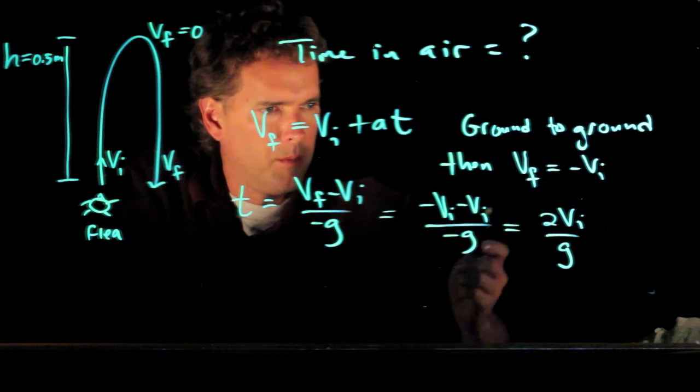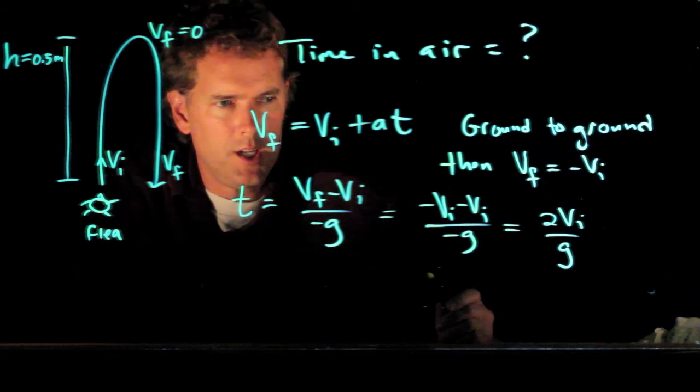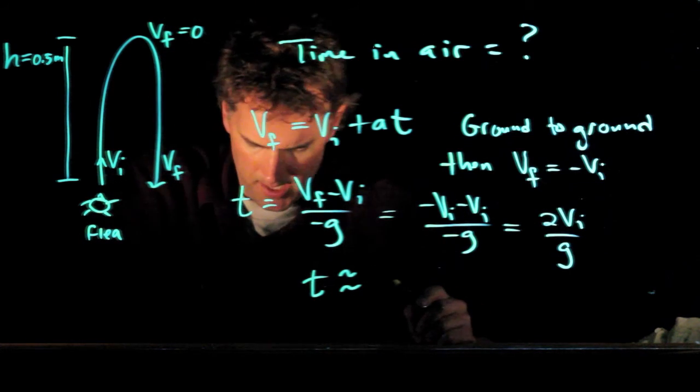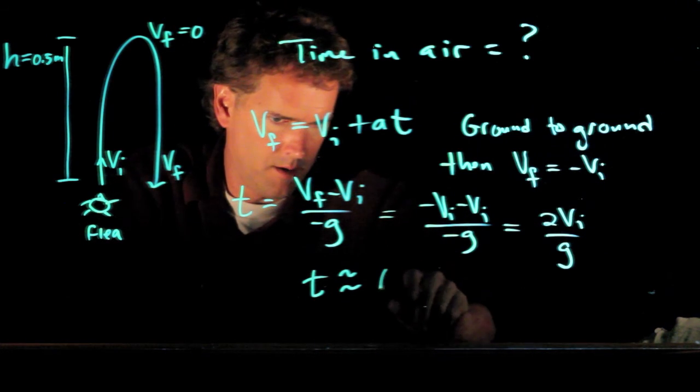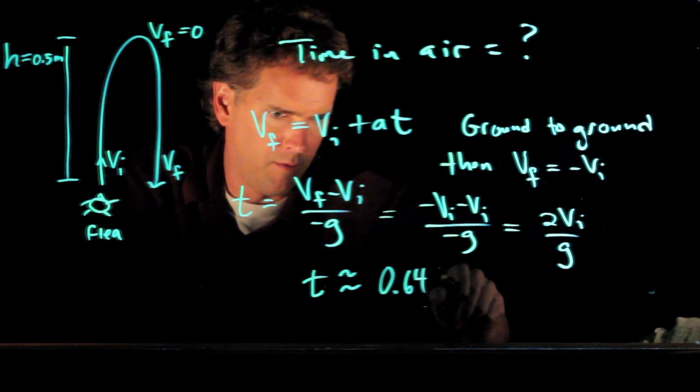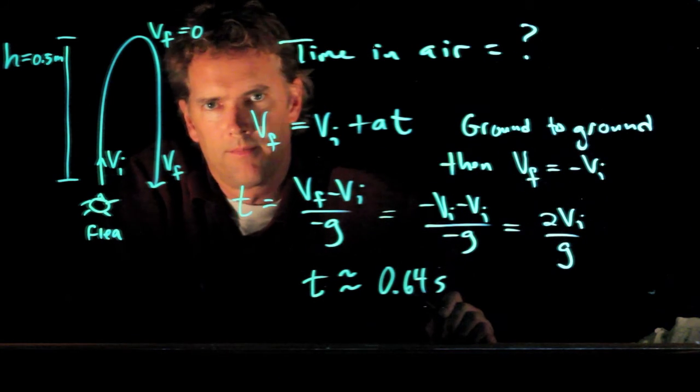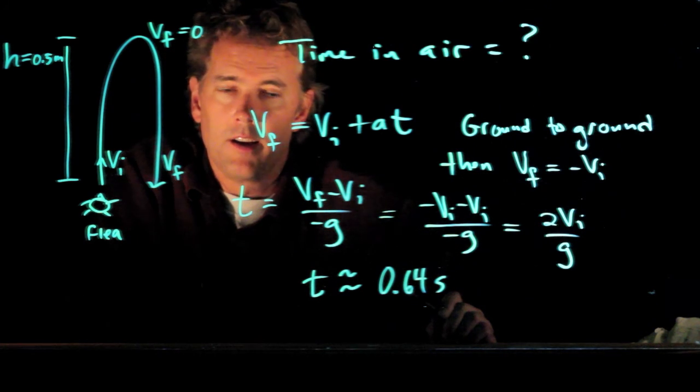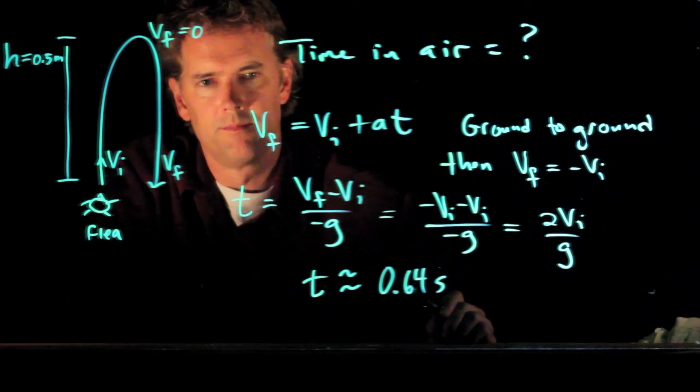And now we know all those numbers. We know VI from the first part. G is, of course, 9.8. And if you run those numbers, you should get a T of around 0.64 seconds. All right. Check that for yourself. Hopefully it's clear. If not, come see me in my office. Cheers.